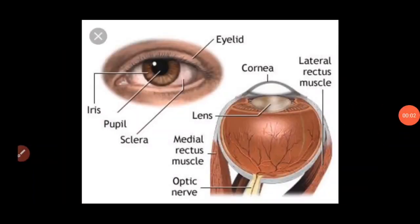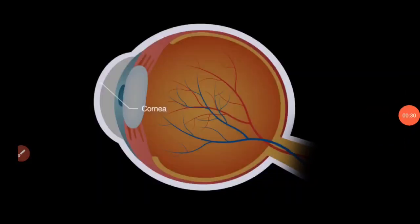In this video we are going to learn some important parts of the eye. The first one is the cornea, the second is the iris, the third is the pupil, the fourth is the retina, the fifth is the eye lens, and the sixth is the ciliary muscles. These parts are very important for the eye.